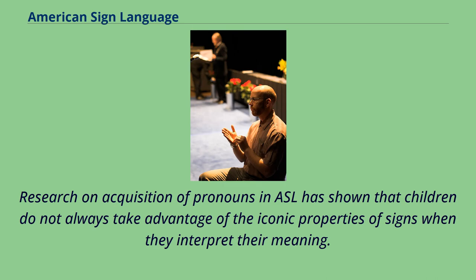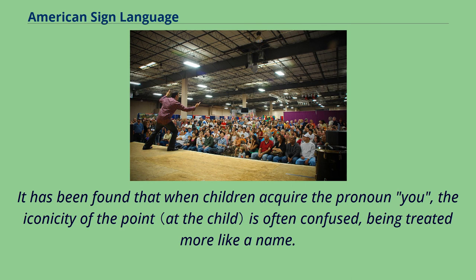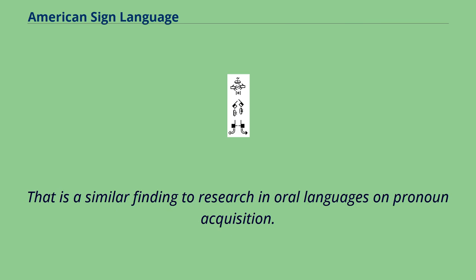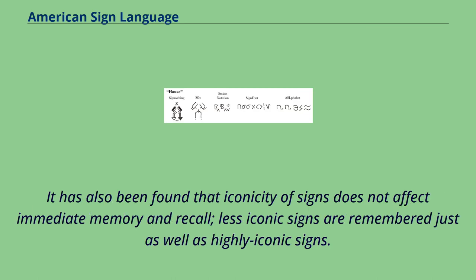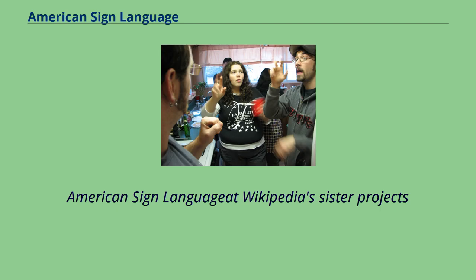Research on acquisition of pronouns in ASL has shown that children do not always take advantage of the iconic properties of signs when they interpret their meaning. It has been found that when children acquire the pronoun 'you,' the iconicity of the point is often confused, being treated more like a name. That is a similar finding to research in oral languages on pronoun acquisition. It has also been found that iconicity of signs does not affect immediate memory and recall; less iconic signs are remembered just as well as highly iconic signs.